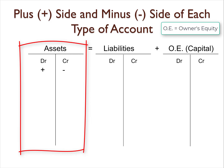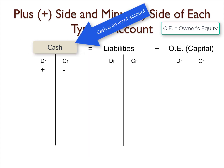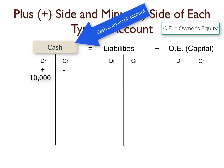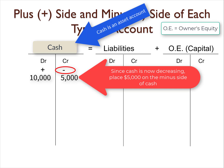Using cash as an example, if a company receives $10,000 of cash, we would need to put $10,000 on the left or debit side of the cash account because the account is increasing and because cash is an asset account. If cash later decreased by $5,000 because they paid a bill, we would need to put $5,000 on the right side or credit side of cash. This applies to all asset accounts such as accounts receivable and the land account.